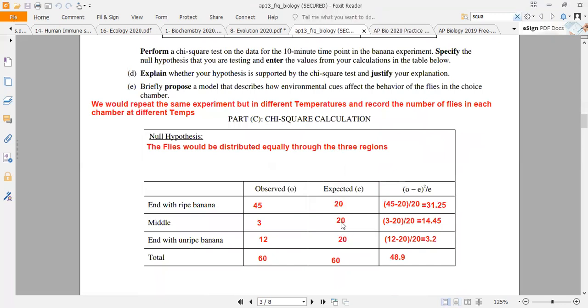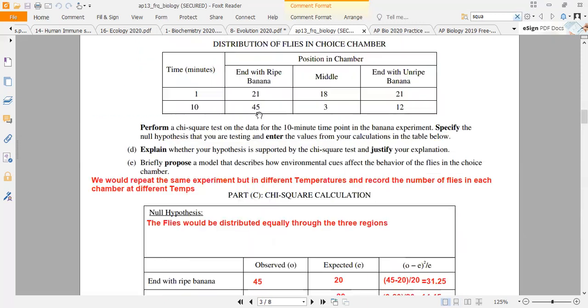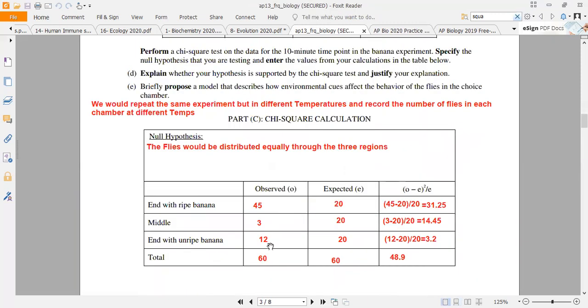The expected value, we know how to calculate. For the outcomes, I will show you how to do it. The observed values here in the data are 45, 3, and 12. Then I have the formula: observed value minus the expected value, squared, divided by the expected value.